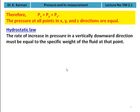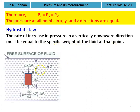Next, we take the hydrostatic law: the rate of increase in pressure in a vertically downward direction must be equal to the specific weight of the fluid at that point. To prove this, we consider a small fluid element ABCD, with height delta-z, cross-sectional area delta-a, at a distance z from the free surface.